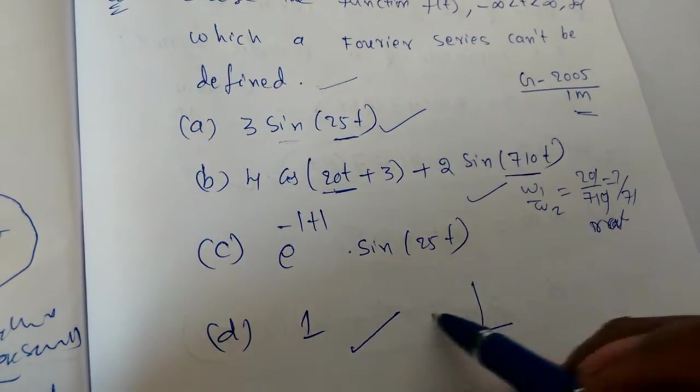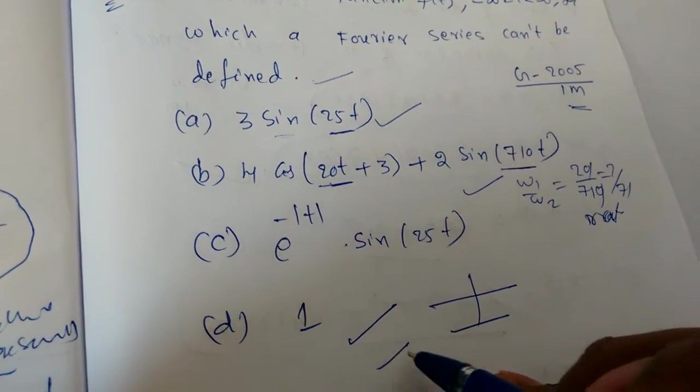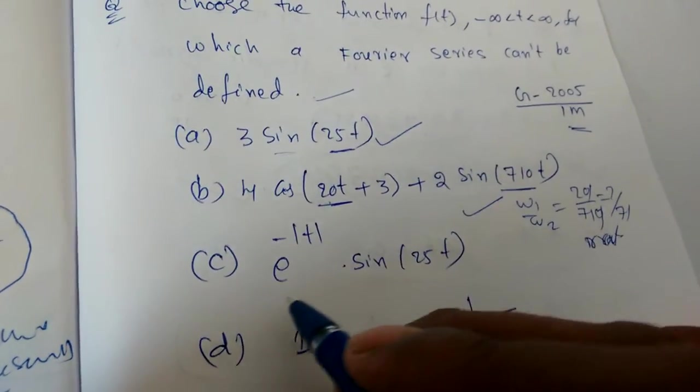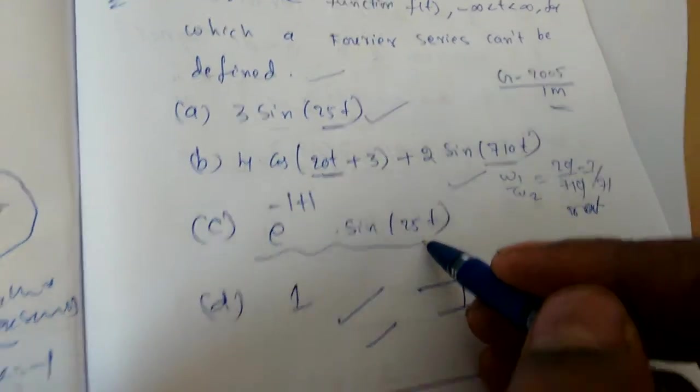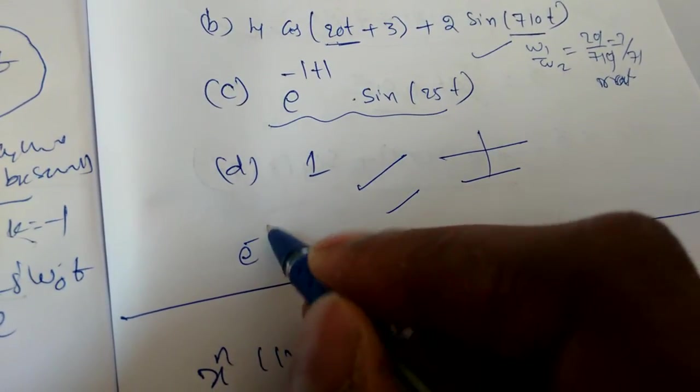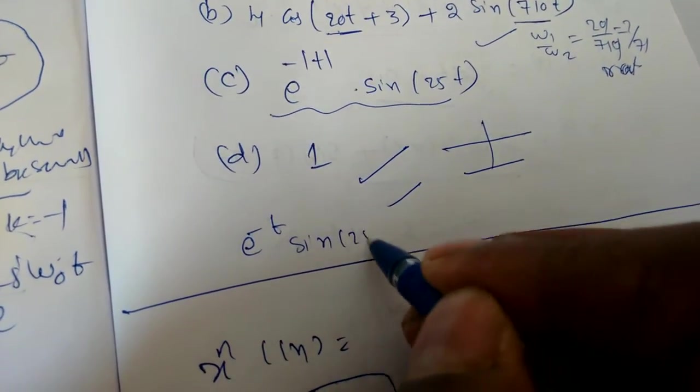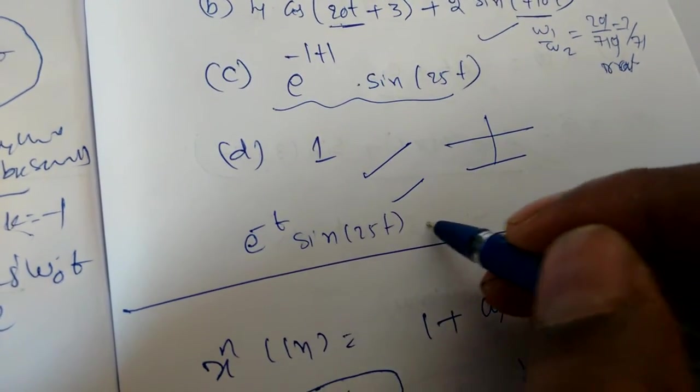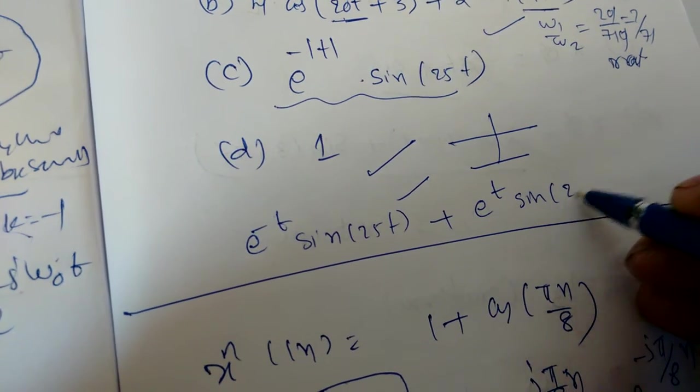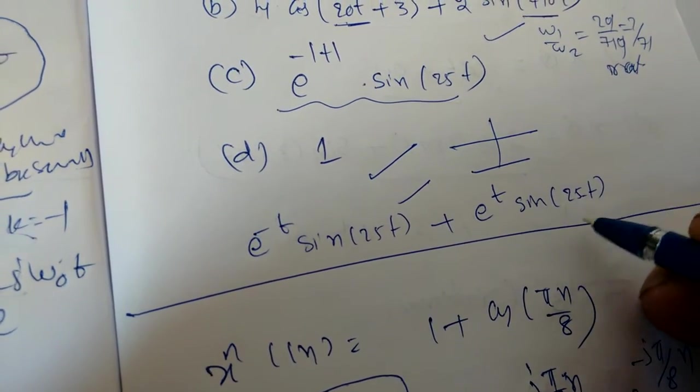1, anyway it is a constant signal, so we can say it is a periodic signal. This can be represented by Fourier series. The only signal which is not periodic is e power minus mod t. This can be written like this: e power minus t sin 25t for t greater than 0. For less than 0, e power t sin 25 minus t.